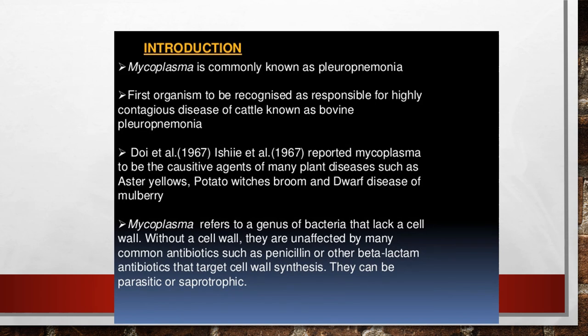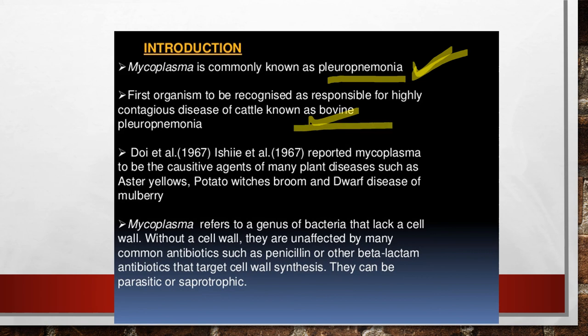Mycoplasma comes under the category of Kingdom Monera. It is commonly called PPLO — pleuropneumonia-like organism. It was the first organism recognized as responsible for the highly contagious disease of cattle known as bovine pleuropneumonia. It was reported as a causative agent by Doi et al. in 1967 and was identified as a causative agent of many plant diseases such as aster yellows, potato witches' broom, and dwarf disease of mulberry.